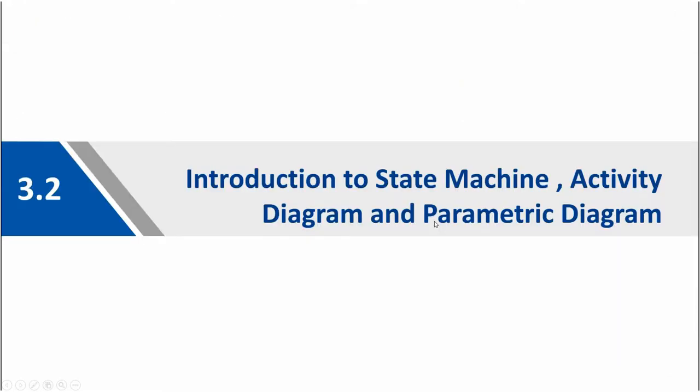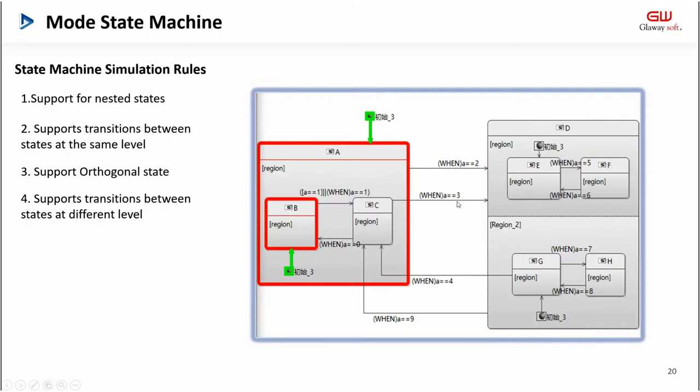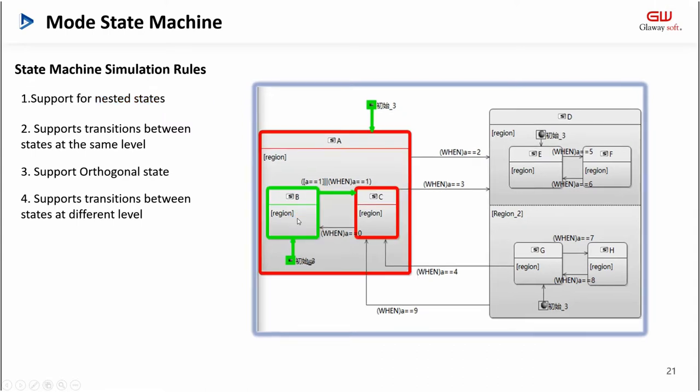In Chapter 3.2, I will cover the simulation of state machine, activity diagram, and parametric diagrams. Regarding the state machine, we have achieved the following capabilities. We support nested states. As shown, we call state A the parent state and state B the child state. In this case, both state A and B are executing.